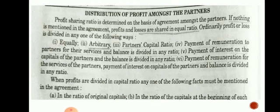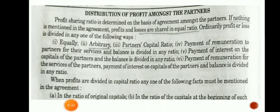Now we are going to discuss about distribution of profit among the partners. Profit sharing ratio is determined on the basis of agreement amongst the partners. If nothing is mentioned in the agreement, profit and losses are shared in equal ratio. Ordinary profit or losses is divided in any one of the following ways. The word 'agreement' is very important to understand the profit sharing ratio.